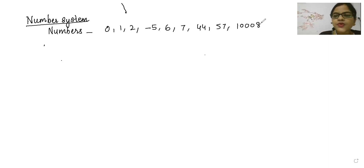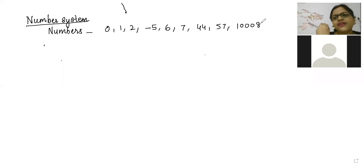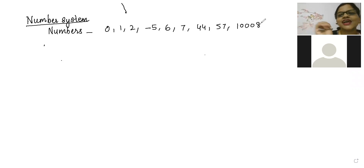My first question: you are telling all these are numbers, but can you tell me how many digits are there? Think and say. There are total 10 digits. Kanishka, Ashwin, Keshav, Jeeva — all are telling 10 digits. Super.